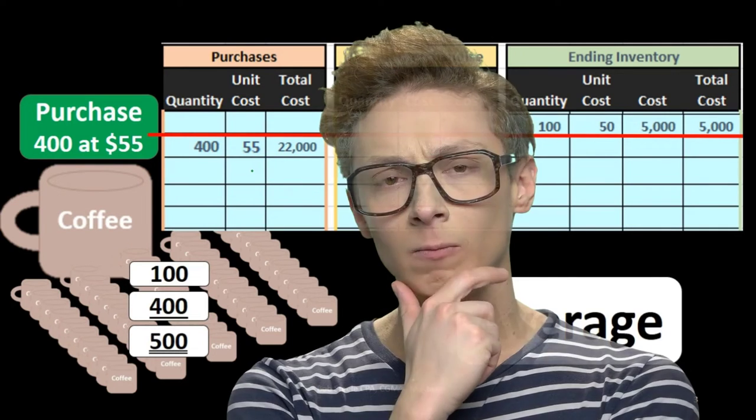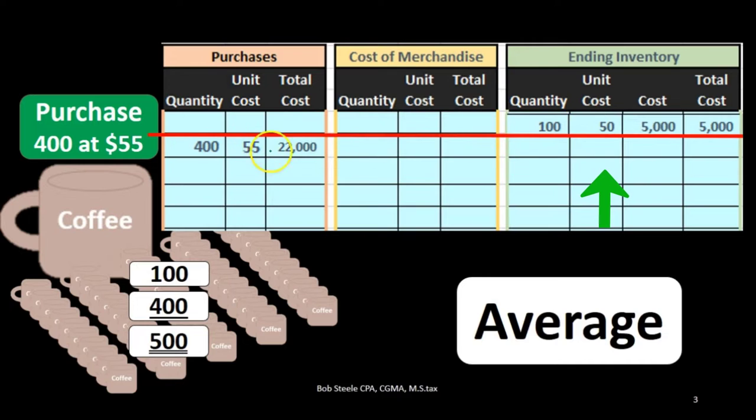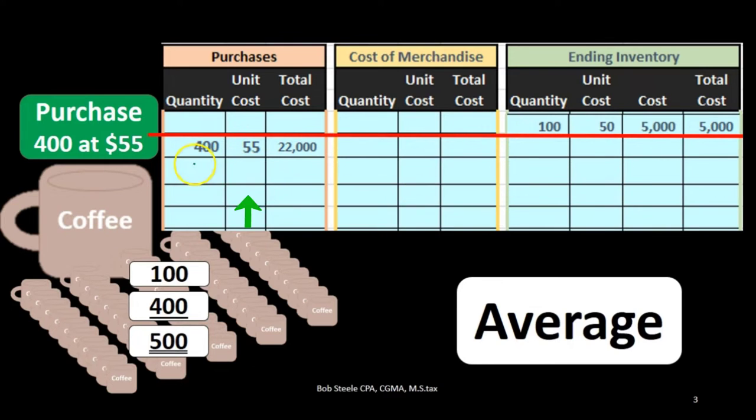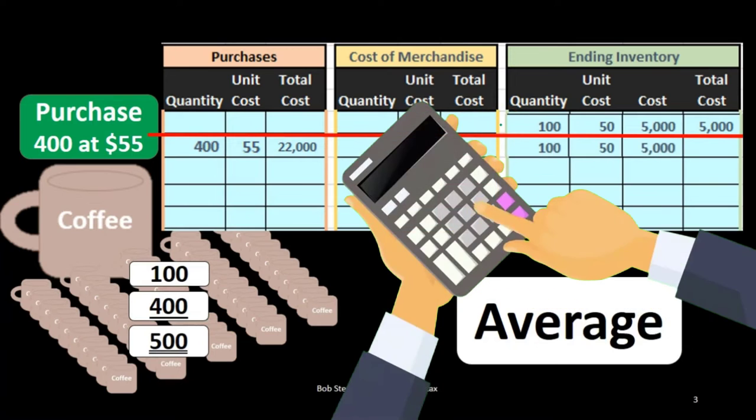You might be thinking that an average would be just 50 plus 55 divided by two, but we're really using kind of a weighted average because there's a lot more units at the 55 than the 50. We're going to have to do the calculation that will be something like this.